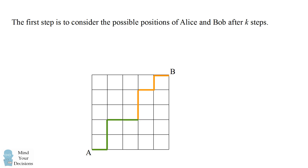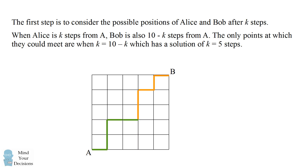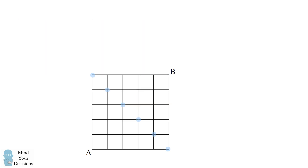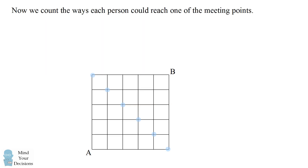We can see this algebraically. When Alice is k steps from point A, Bob is also 10 minus k steps from point A. So the only points at which they could meet happen when k equals 10 minus k, which has a solution of k equals five steps. So the only possible meeting points are five steps from either of their starting points — this is along the main diagonal of the grid.